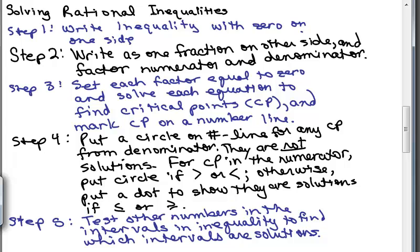Here are the steps — pretty similar to solving the polynomial inequalities. First, we're going to write the inequality with 0 on one side. Then we're going to write it as one fraction on the other side and factor the numerator and denominator. Next, we're going to set each factor in both the numerator and denominator equal to 0 and solve to find the critical points.